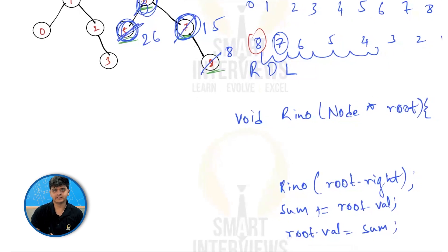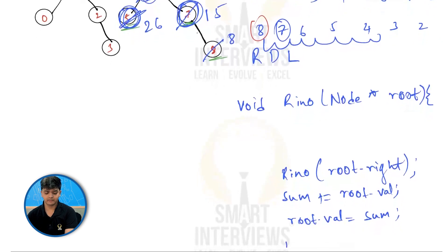Next, I'll have to do the same thing on the right side. Right side is already done. So I have to do the same thing on the left side. So I should do reverse in-order on root dot left.